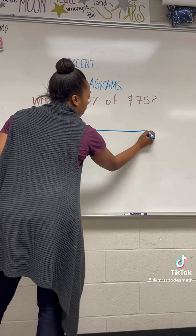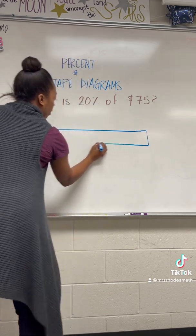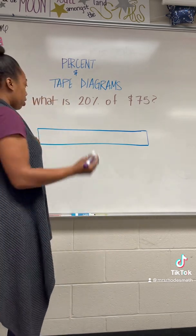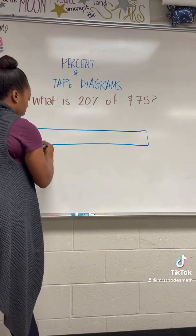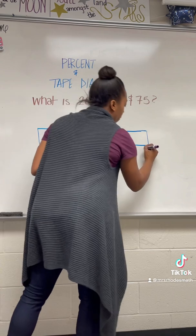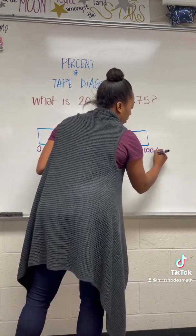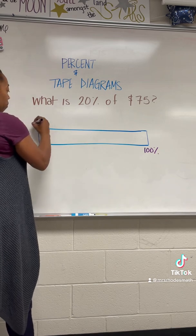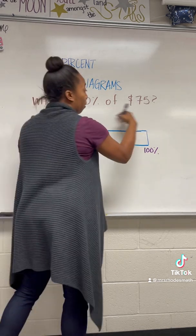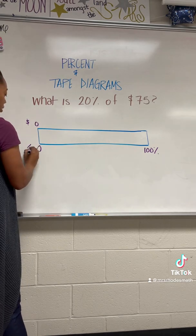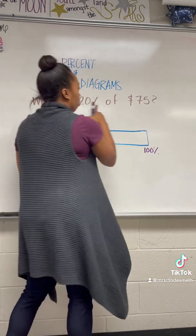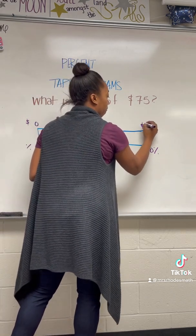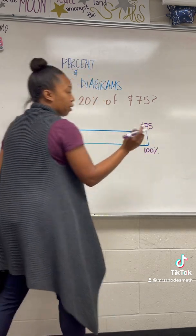Don't worry about the fact that I am not an artist and I don't plan to be one. What I am going to have my kids do is label. I always put the percent on the bottom and the values — the rate portion — at the top. So this is the percent and this is the money. We're talking about a whole of 75, so $75 is my whole, and I'm going to put that in line with my 100%.